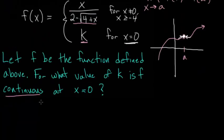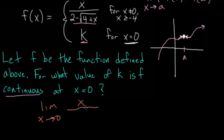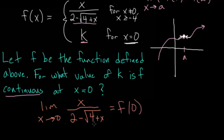We want to take the limit as x approaches 0 of the top equation, which is x over the quantity 2 minus the square root of 4 plus x. This must equal the function evaluated at 0, which is k. So if we can evaluate this limit, we can figure out what k must equal.